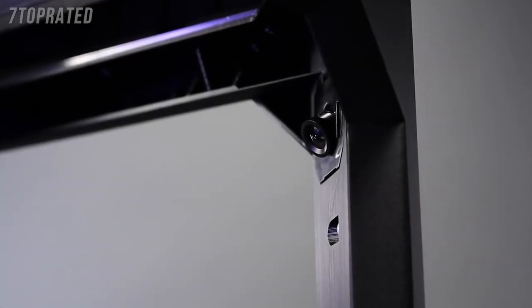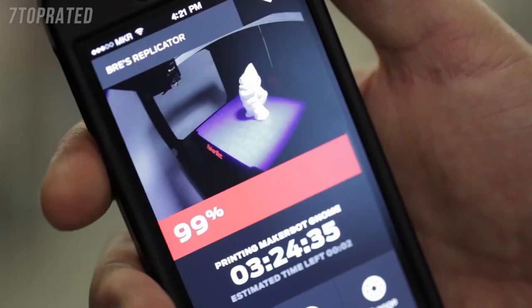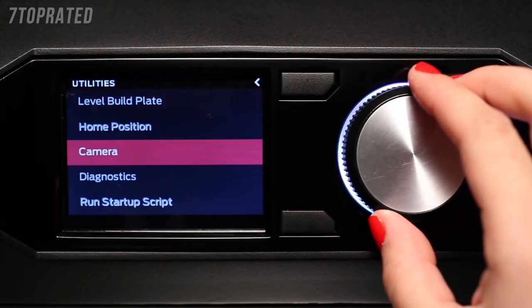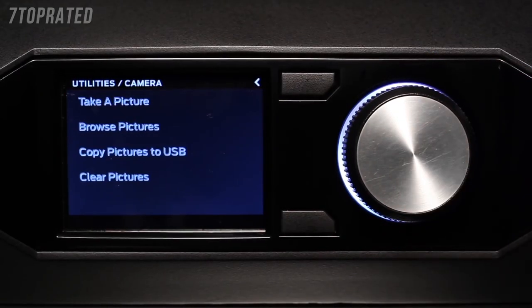One of the things that the onboard camera allows you to do is remote monitoring. That means you can go pour yourself a cup of tea, and while you're doing it, check the status of your 3D model. It also is a very powerful tool for sharing. The machine can snap a picture for you, and that makes it easy for you to share your model on Thingiverse and other social networks.